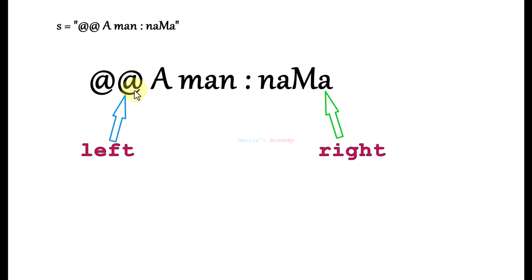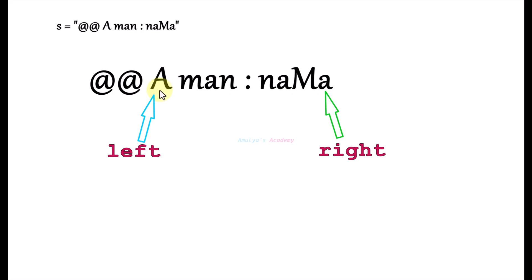We skip non-alphanumeric characters by moving the pointer forward. For example, if the next character is a space, it is not alphanumeric, so skip it and move the pointer to the next character. We continue until we reach an alphanumeric character — for example, 'A' is an alphabet, so we stop. Similarly, check the character at the right pointer; if it is an alphabet, stop there as well.